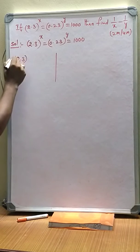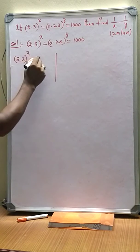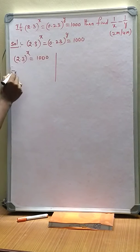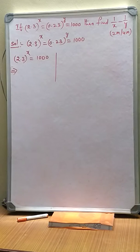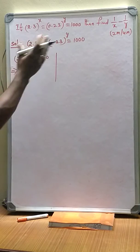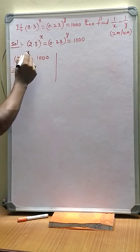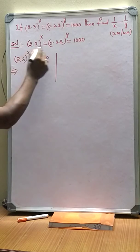2.3 to the power of x equals 1000. From the exponential form, if you write the logarithmic form, then the solution will become very easy. Now, first of all, let us transpose this exponent into RHS.